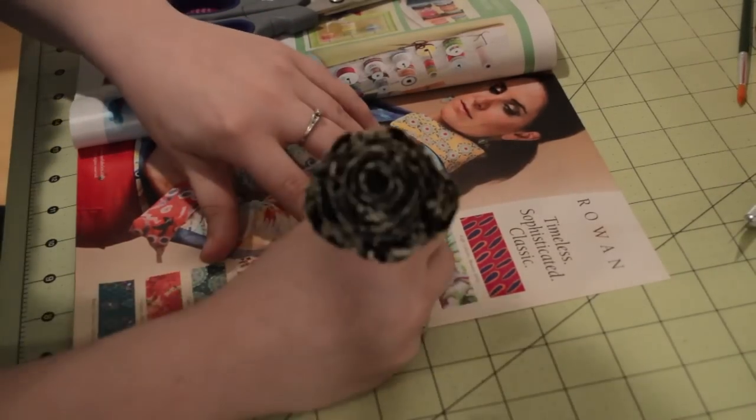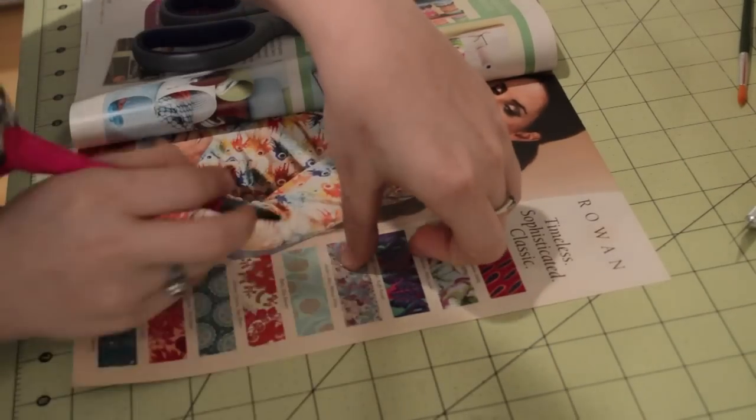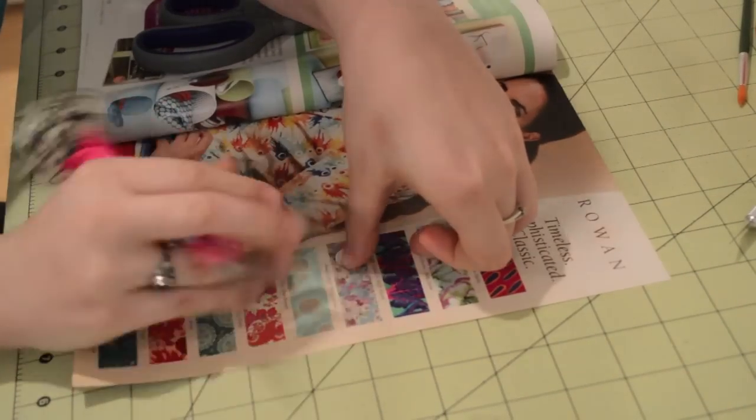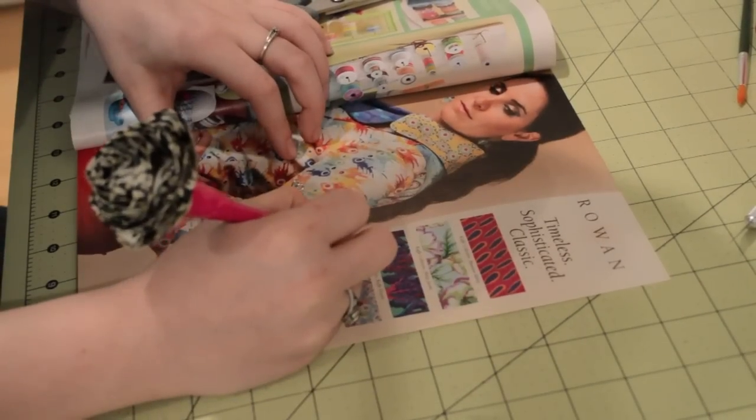So using your bale plate as a guide, trace around it on whatever image you want to be showing through the gem.